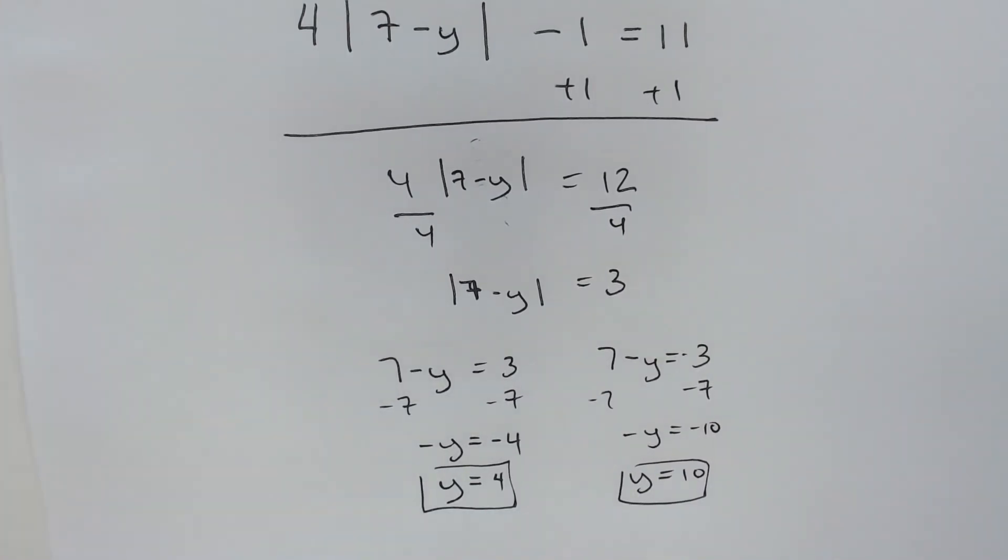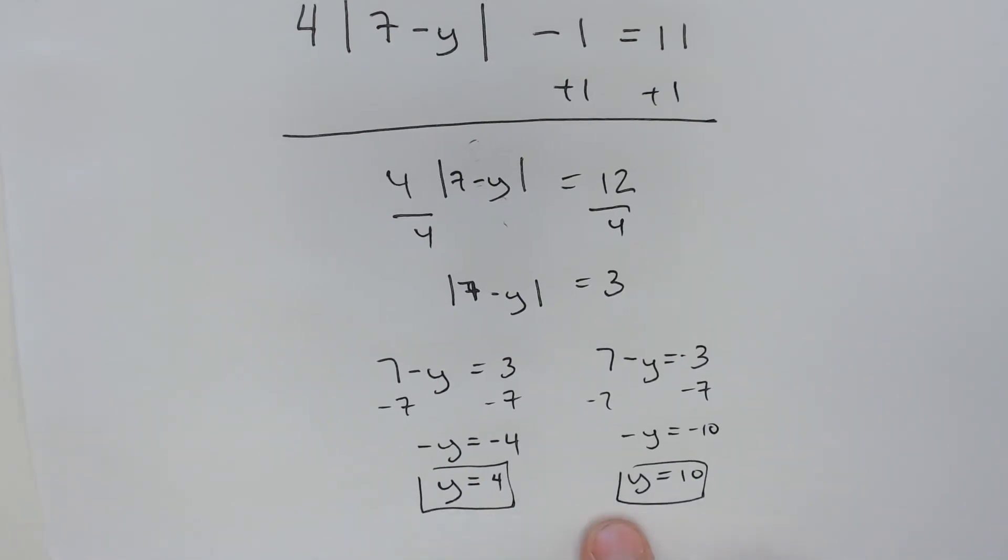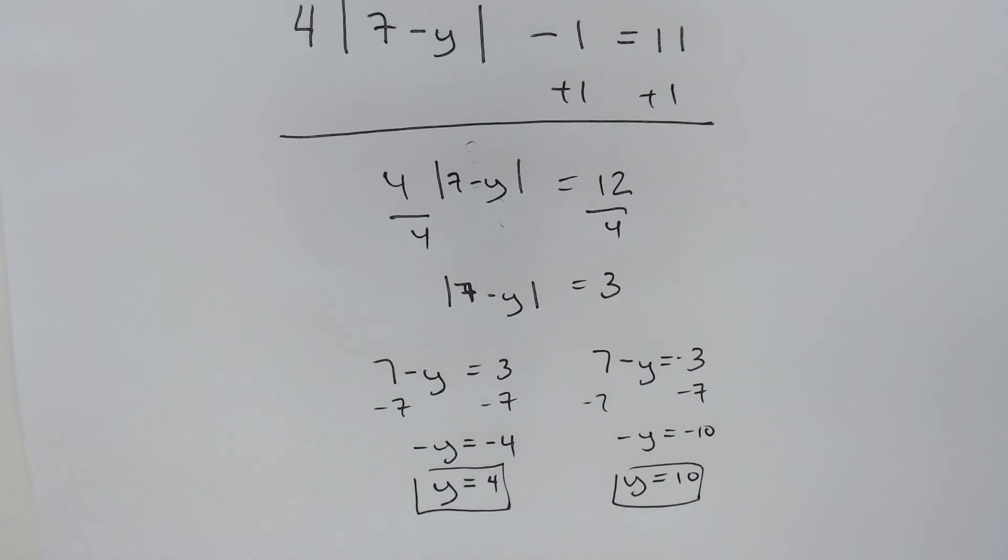Now, I know I got on this rant about how absolute values can't be negative, but the answers for y can be negative. These are both positive, but if they were negative, that wouldn't be a red flag. Be careful, but it's not the end all be all. We should still plug in these answers.